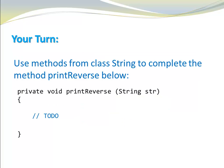Now it's your turn. Use methods from class string to complete the method printReverse below. So here is my method printReverse. It returns nothing. So here return type is void. And it has one parameter of type string. So we pass in the string and it just prints the string in reverse order. Give yourself a moment to write this method. Pause the video. And when you're ready, press continue.